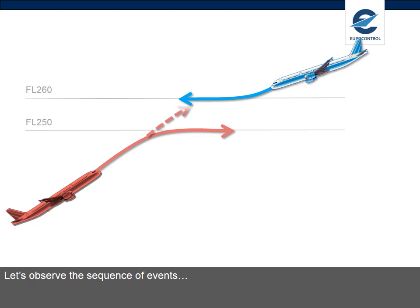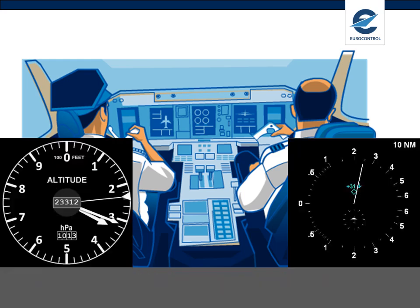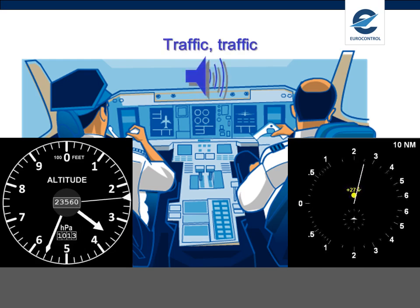Let's observe the sequence of events. We start when our aircraft is passing flight level 233. The other aircraft, 8 miles away, flying in the opposite direction, is descending through flight level 265. Traffic, traffic.